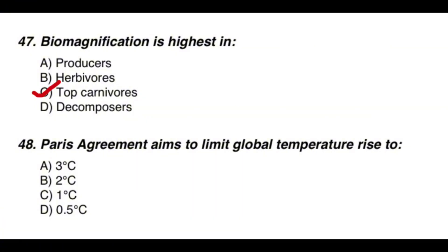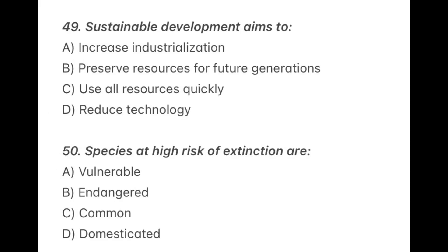Question 48: The Paris Agreement aims to limit global temperature rise to — the correct option is B — 2 degrees Celsius. Question 49: A simple question — sustainable development aims to — the correct option is B — preserve resources for future generations.